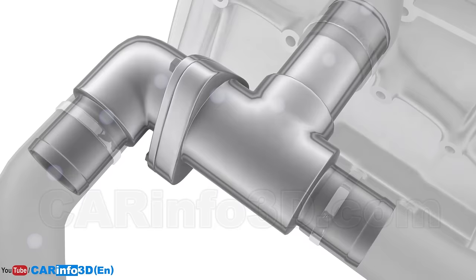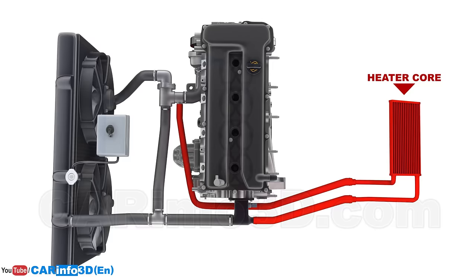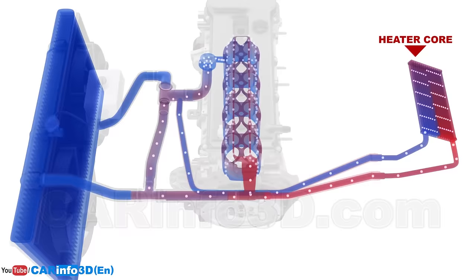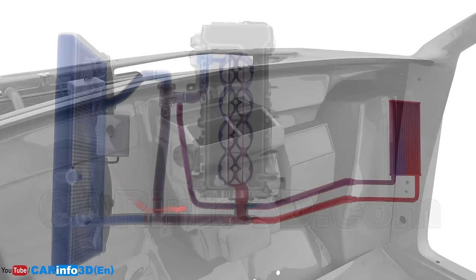You can now see a fully operational cooling system. However, it is missing one critical component the car can't do without: the heater core. In this layout, the heater core is integrated into the cooling system separately from the thermostat. The heater core harnesses the heat from the coolant to heat the vehicle's cabin. The cooling system is now complete.